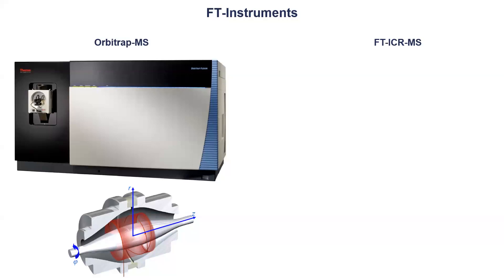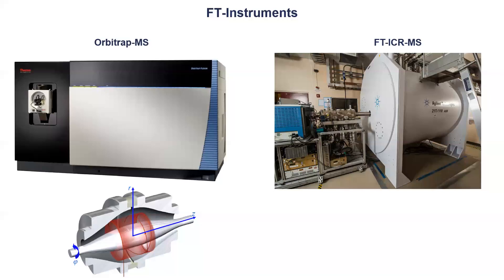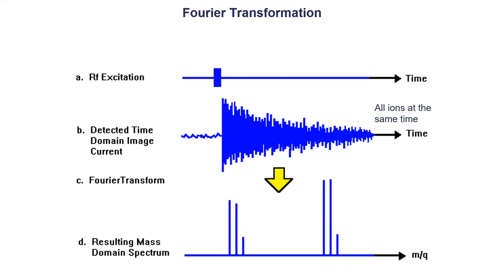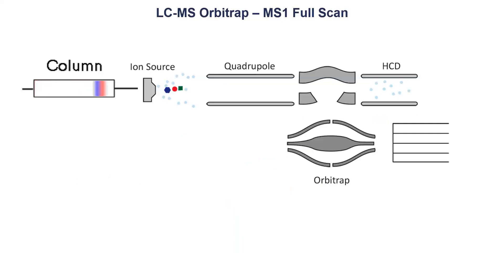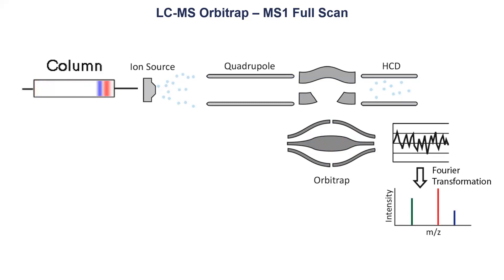If we go to the Fourier transform instruments, we have the Orbitrap on one side and FTICR on the other. These are very specific types of instruments. We actually detect all ions at the same time based on their image current signals. In the Orbitrap, ions oscillate in a specific direction around a central electrode, and this oscillation induces an image current. Based on a Fourier transform computation by the computer, we then get the mass spectrum output. So there is a lot of computation happening behind what you see as raw data. Here is the full setup: the column, ions entering the C-trap, then going into the Orbitrap where they spin and oscillate. The oscillation from left to right gives us the image current, and from that we get our mass spectrum.